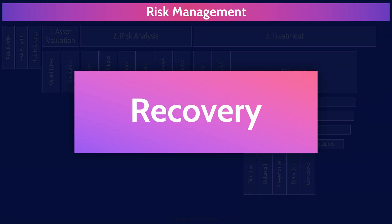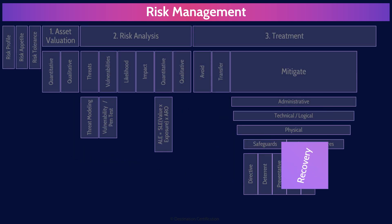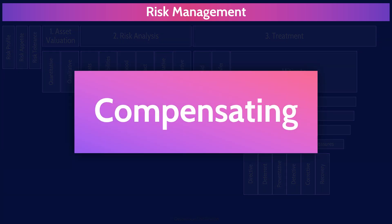Recovery controls help organizations recover from the impacts of a risk occurring — getting back to business as usual. A good example is a disaster recovery plan, put in place to help recover from something bad happening. Compensating controls are measures put in place to mitigate the negative impacts of risks when other controls are not effective or feasible — essentially making up for the lack of a better control.